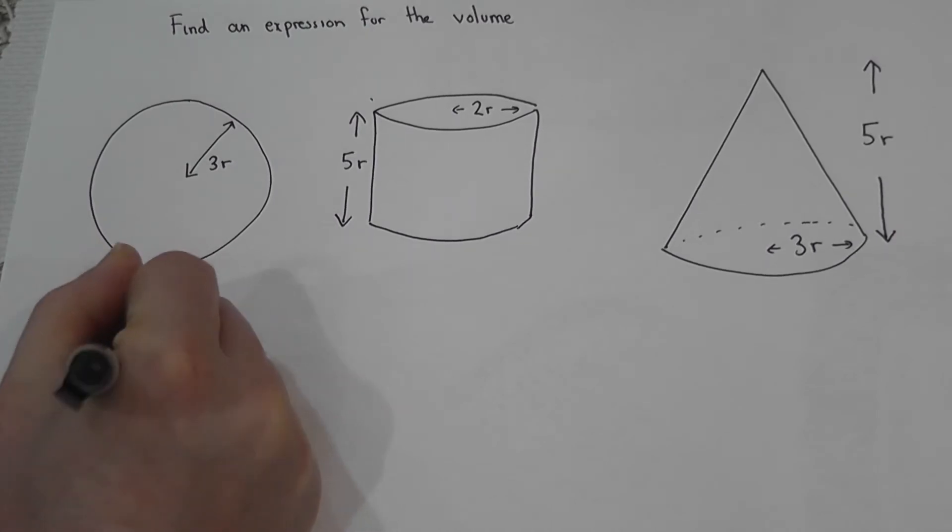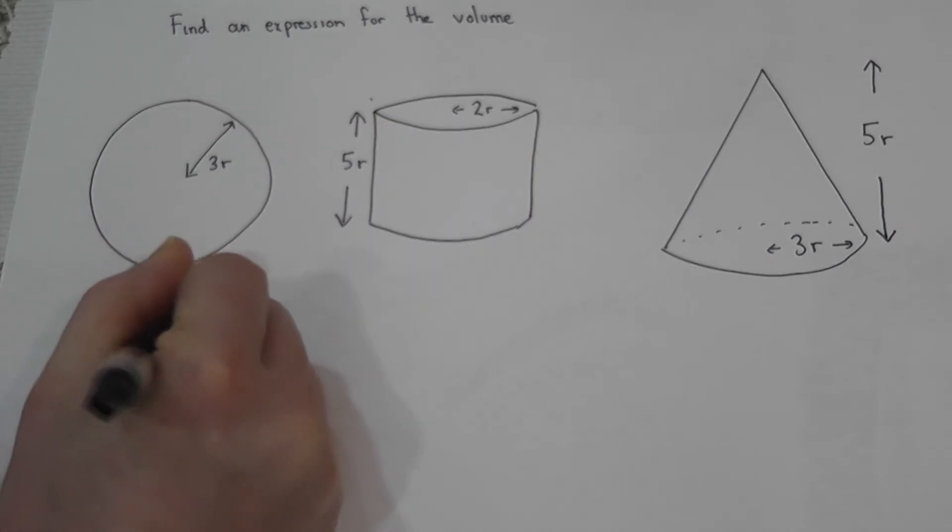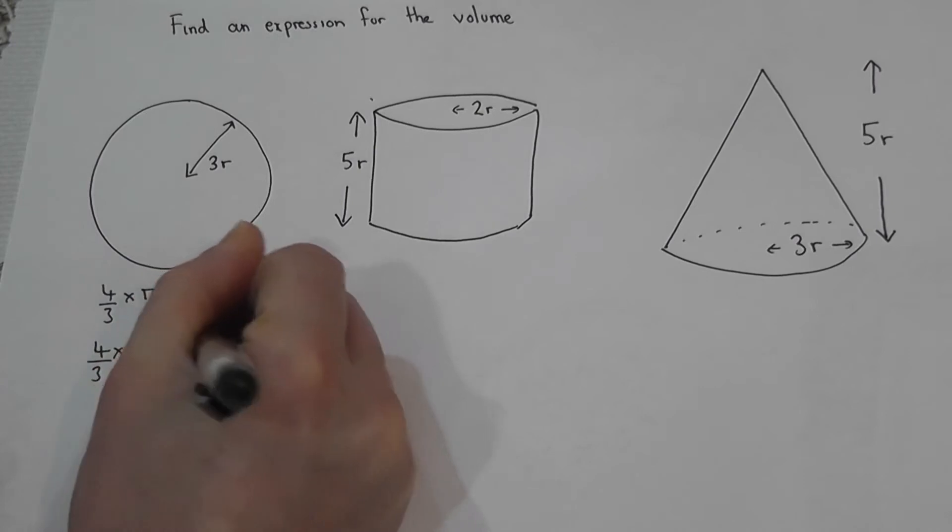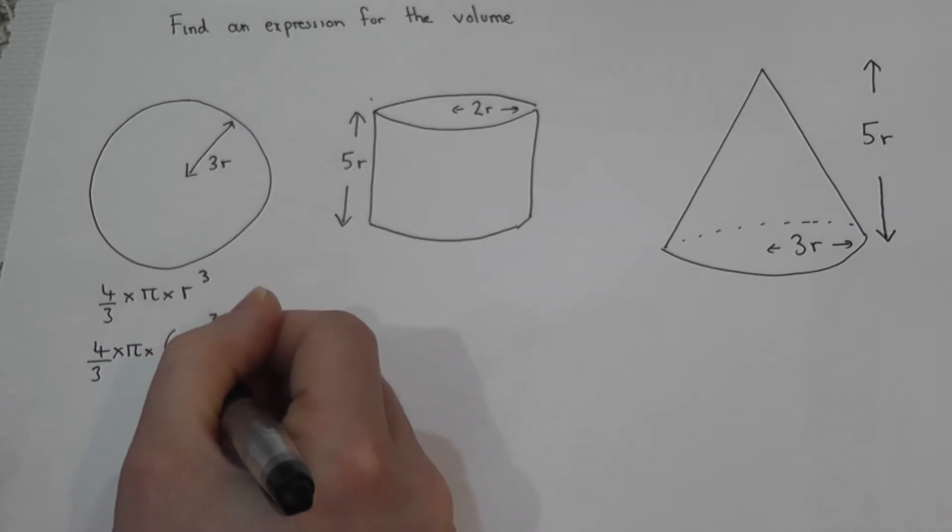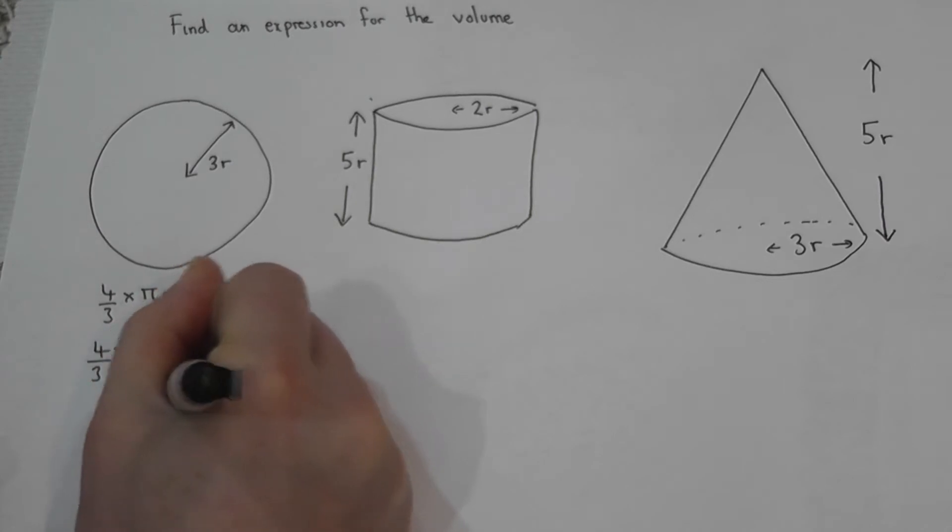So the volume is four thirds times pi times by this entire radius to the power of 3. Now to work this out I've got to cube both the 3 and the r. Now 3 cubed is 27, r cubed is just r cubed.